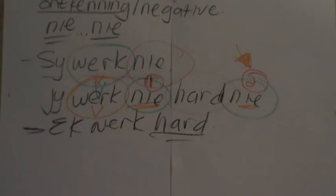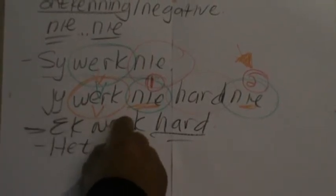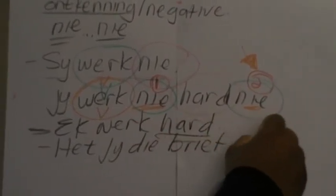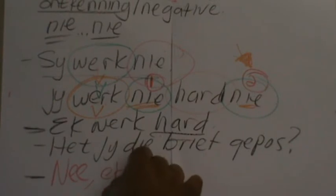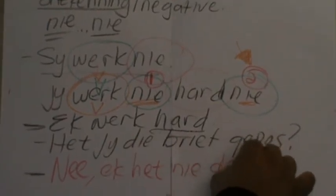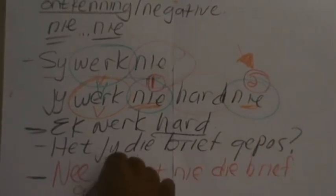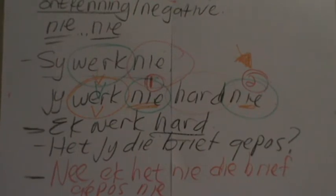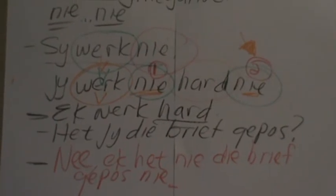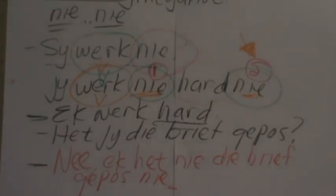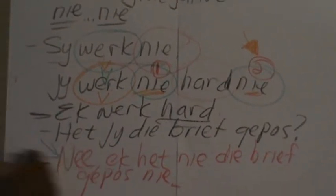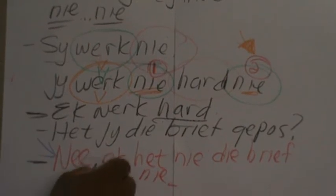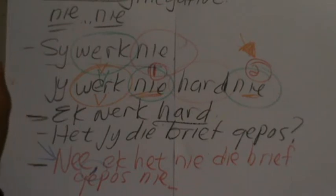Let's look at another sentence quickly. If I were to ask a question like, 'Het jy die brief gepos?' — did you post the letter? And then the reply would be: no, I did not post the letter. My question is, 'Het jy die brief gepos?' — did you post the letter? Please take note of the comma, because some people are asking why there are three nies in the sentence.